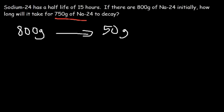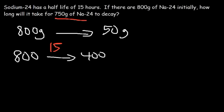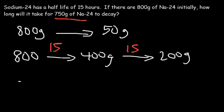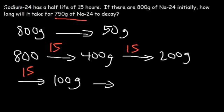It will take 15 hours — one half-life — for half the sample to decay, leaving 400 grams of sodium-24 unchanged. After another 15 hours we'll have 200 grams left over unchanged. After another 15 hours we'll have 100 grams remaining. After yet another 15 hours it will be down to 50 grams.